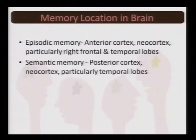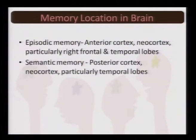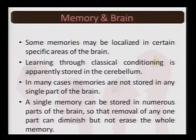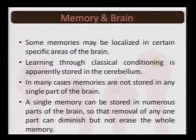The amygdala relates to biologically relevant cues. Object recognition memory involves the entorhinal cortex. The basal ganglia and cerebellum are involved in procedural memory, where stimulus-response associations come into play. For episodic memory, the anterior cortex and neocortex — particularly the right frontal and temporal lobes — are important. For semantic memory, the posterior cortex and neocortex, particularly the temporal lobes, are key. Some memories are localized in specific brain areas — for example, classical conditioning is stored in the cerebellum — but in many cases a single memory is stored across numerous parts, so removal of one part can diminish but not erase the whole memory.